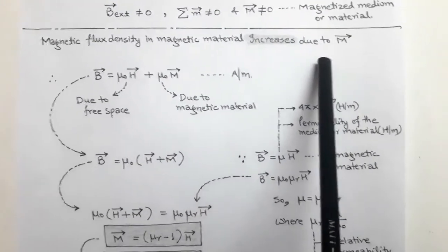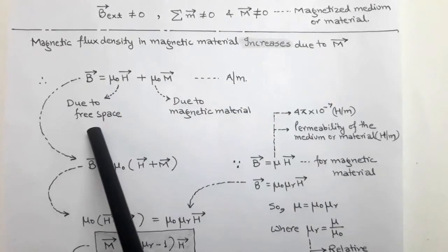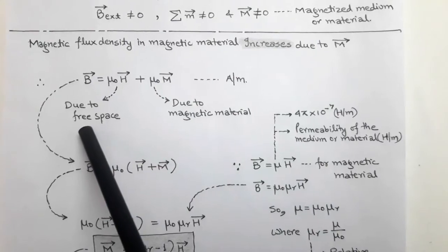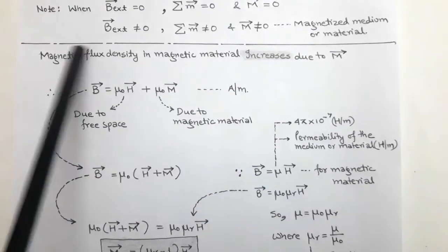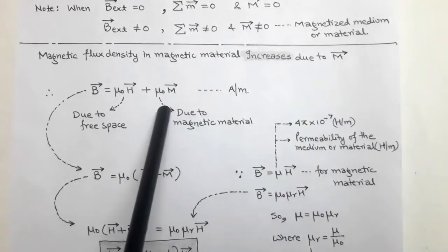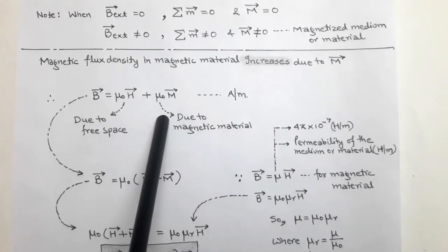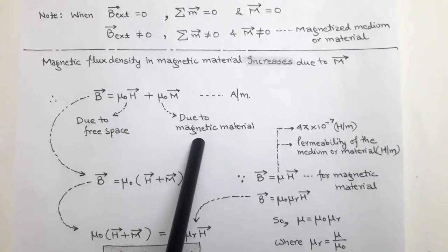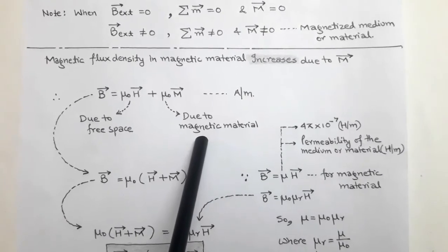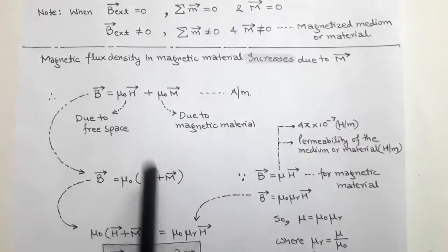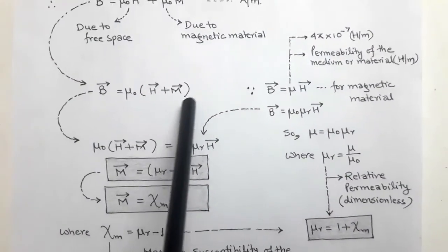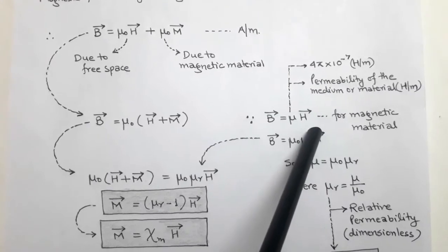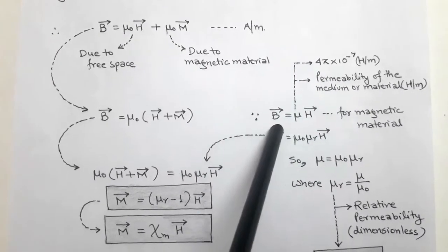We know that B vector equals μ₀H vector, which is the relation of magnetic flux density B vector and magnetic intensity H vector in free space. When we use a magnetic material, the magnetic flux density increases due to the magnetization of the material. So the magnetic flux density B vector equals μ₀H vector plus μ₀M vector. The first term is due to free space and the second term is due to the magnetic material. Taking μ₀ as common: B vector equals μ₀(H vector plus M vector). We also know that B vector equals μ into H vector — the magnetic flux density for any magnetic material.